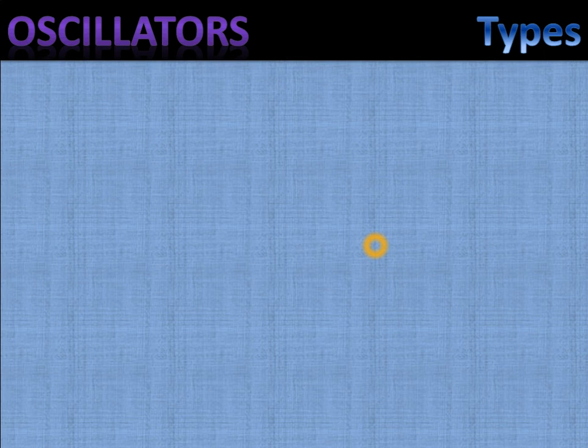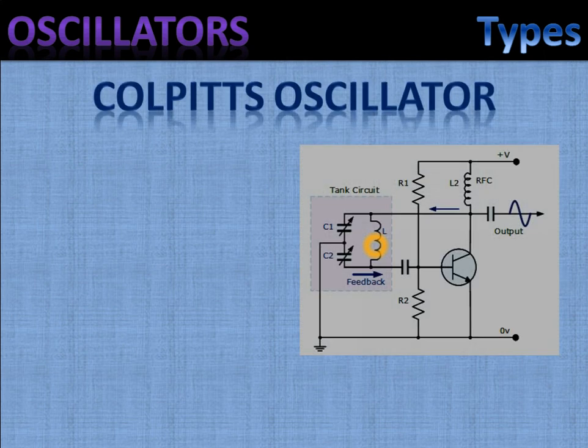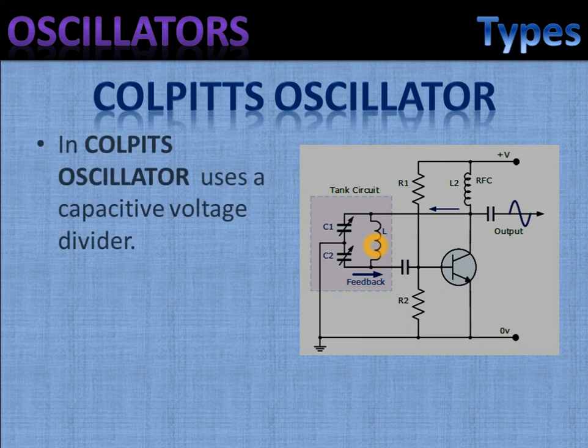Next, let's see about Colpitts oscillator. Colpitts oscillator is the exact opposite of the Hartley oscillator which we looked in the previous slide. It consists of two capacitors and a single inductor. Thus a Colpitts oscillator used as a variable frequency oscillator performs best when a variable inductance is used for tuning.